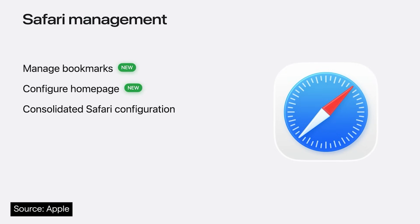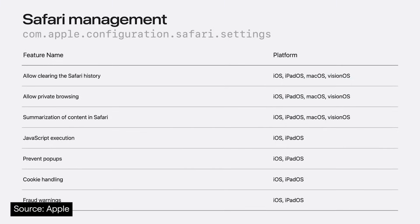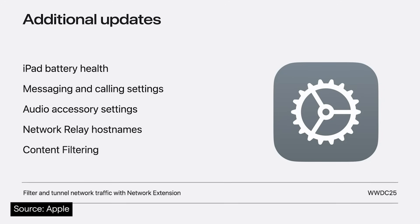Safari config management uses new declarative abilities to push bookmarks, customised start and homepages, manage pop-ups, cookies, etc. And here are even more new features: enhanced content filtering, temporary pairing of AirPods and Beats headphones, Network Relay now supports fully qualified domain names, iPad battery health reporting, and controls for messaging, calling and connectivity to provide management of FaceTime, iMessage and RCS cross-platform texting.